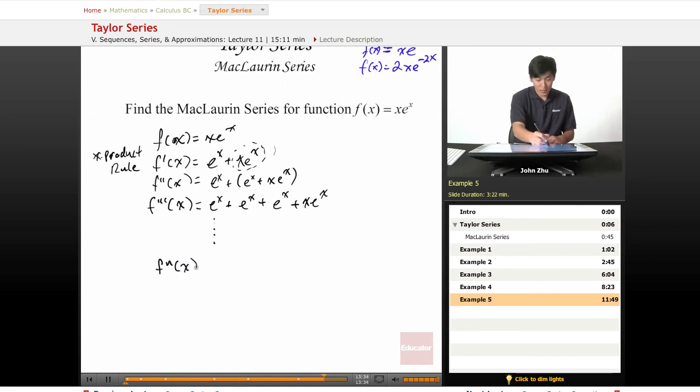fn of x will simply equals, well, here's the third order derivative, and we have three e to the x terms. Well, that means n is directly related to the order of derivatives. So n times e to the x, plus x times e to the x. There will always be an x times e to the x term at the very end.